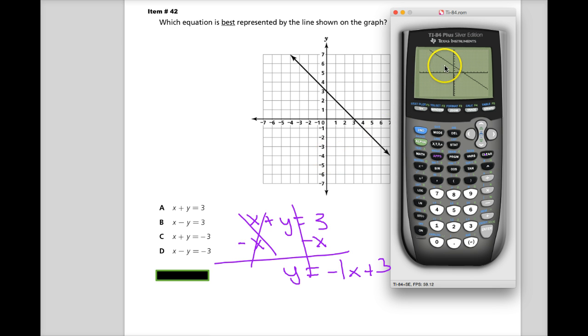You can change the slope, or sorry, the window here to make it 7 and negative 7 if you want to make it look exactly like it. But that's it. Not a big deal.